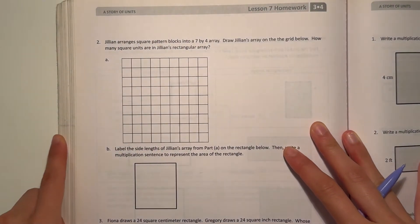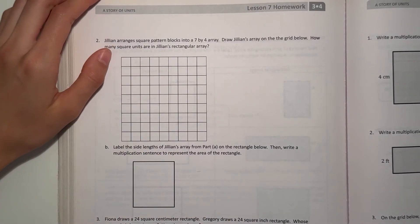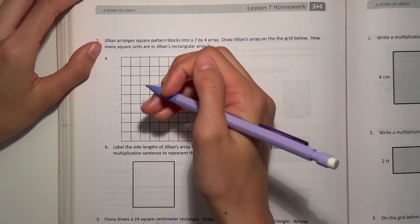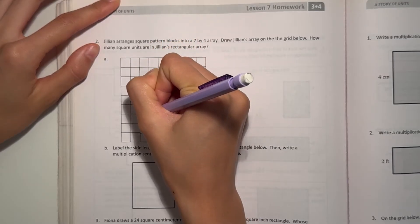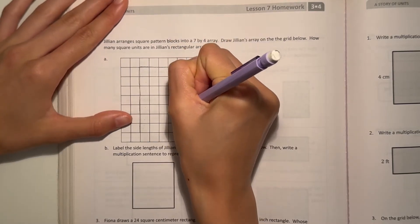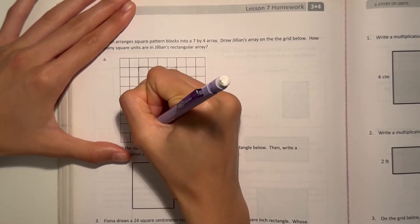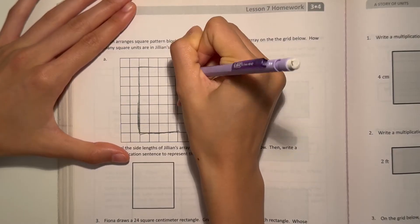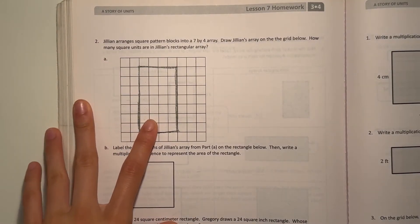Alright, and now our next page. Jillian arranges square pattern blocks into a 7 by 4 array. Draw Jillian's array on the grid below. How many square units are in Jillian's rectangular array? So 7 by 4. 1, 2, 3, 4, 5, 6, 7. And 1, 2, 3, 4. We can bold that so we can see it better.